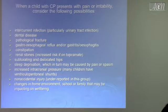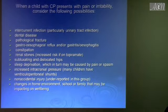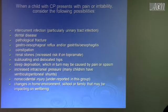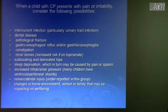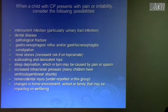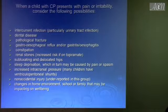Increased intracranial pressure — many of these kids develop hydrocephalus and need a VP shunt. If a CP kid with a VP shunt comes in with seizure and fever, always pay attention to the shunt. Non-accidental injury: these kids are at higher risk for abuse — they require a lot of work and not everyone has the capacity to deal with them. Changes in home environment, school, or family impacting well-being can also cause problems. In stressful situations, families may forget medications like baclofen, and the kid presents with severe spasm and pain.